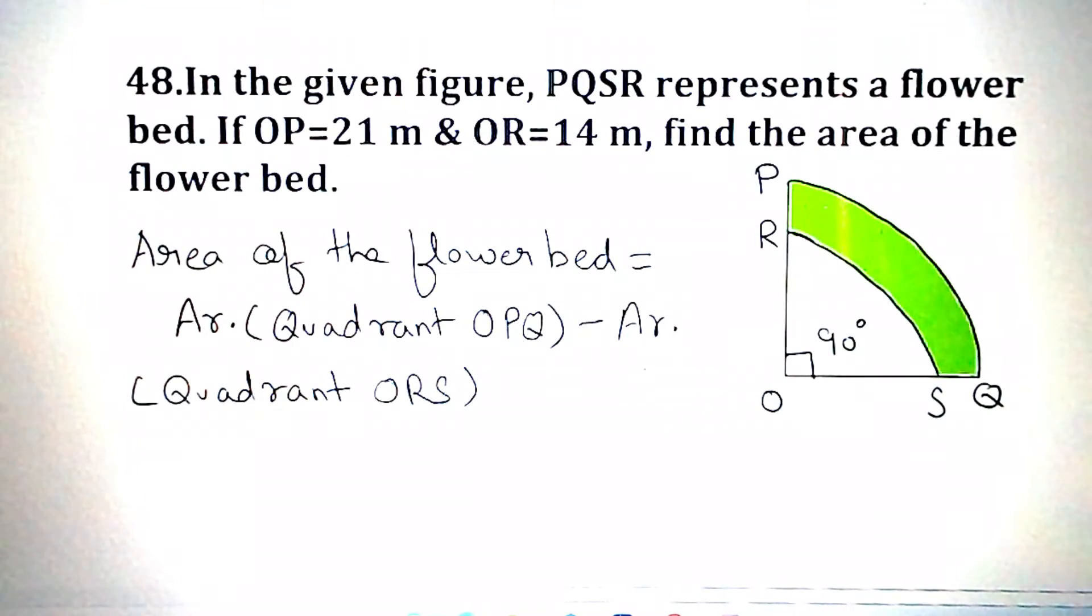Area of the flower bed, that is the shaded portion. Thus, area of the flower bed is equal to area of quadrant OPQ minus area of quadrant ORS.